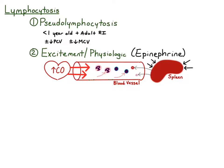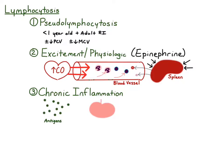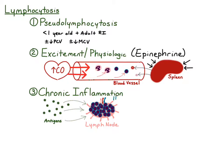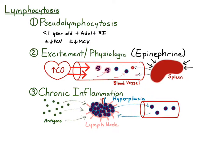The third cause of lymphocytosis is chronic inflammation. Chronic inflammation results from chronic antigenic stimulation — there are foreign antigens or self antigens — and this results in hyperplasia of lymphocytes within lymphoid tissue. These lymphocytes don't stay within the lymphoid tissue; they still undergo recirculation between the blood, the tissues, the lymph node, and the lymphatics. So lymphocytes are distributed throughout the body; we're just seeing more of them in the blood because that's what we're sampling. Chronic inflammation is due to lymphoid hyperplasia from chronic antigenic stimulation.